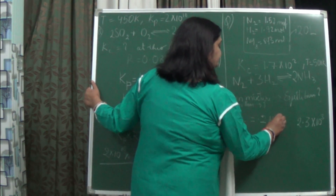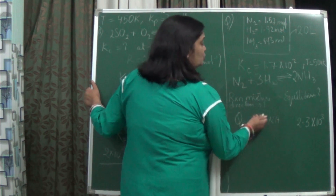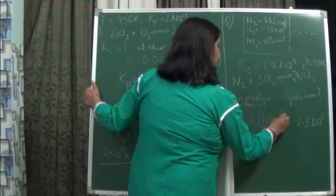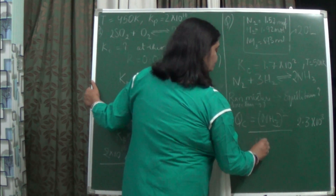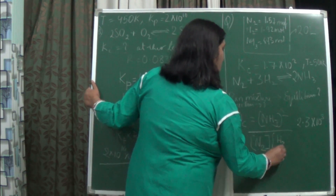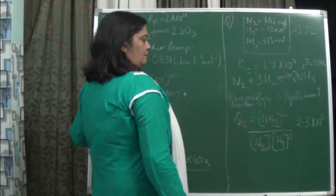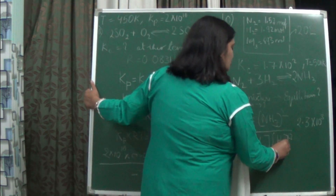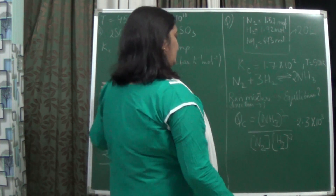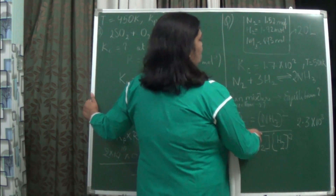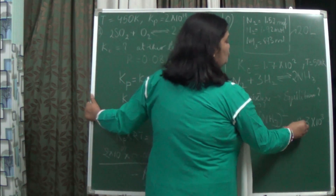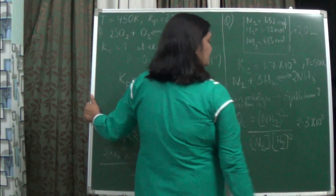So Qc is equal to the concentration of NH₃ squared upon N₂ into H₂ cubed. Put in the values given for each species. After solving, you will get the value of 2.3 into 10 to the power 3.